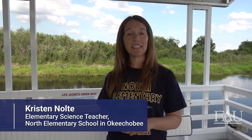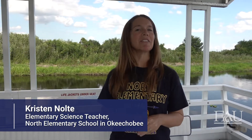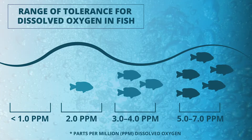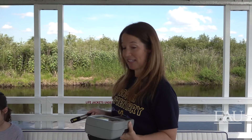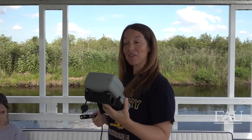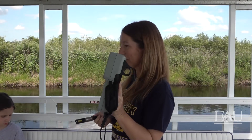The two most important parameters when looking at water quality on the Kissimmee River are dissolved oxygen and temperature. Dissolved oxygen is the amount of oxygen that is in the water and available for fish to breathe, measured in parts per million. When scientists test water quality, they use something called a YSI, and we're going to use that same instrument today.